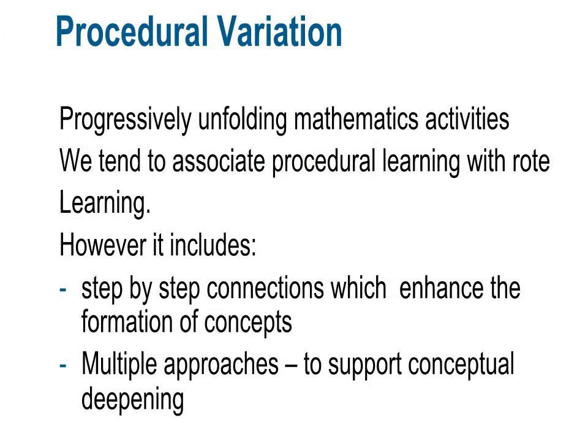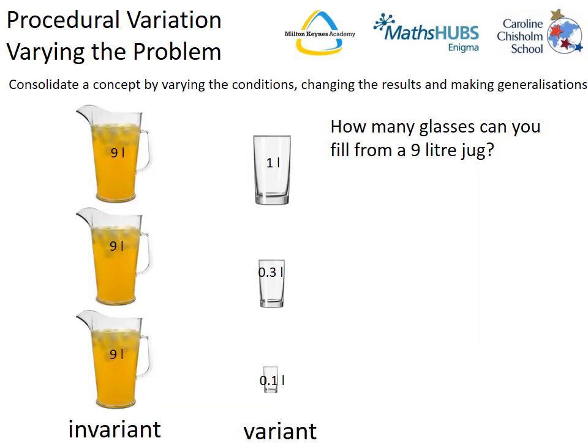Finally, we come to procedural variation. Procedural variation is perhaps the most difficult to understand at first, but it is something that we already do to a certain degree — it is simply the carefulness and the cleverness of the way in which it's done in Shanghai that really makes an impact. The two prongs to this are step-by-step connections and multiple approaches. Take division of a whole number by a decimal, for example — they're keeping one thing the same in order to develop the links and understanding in this concept.